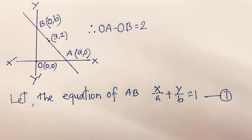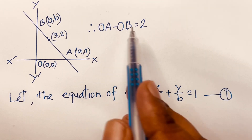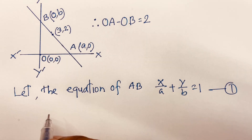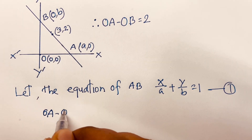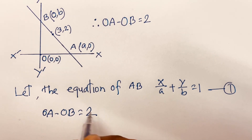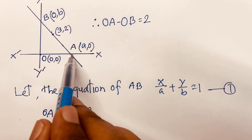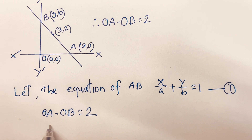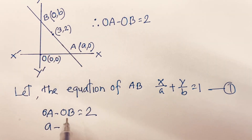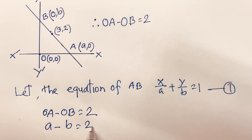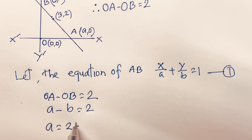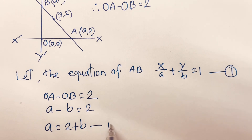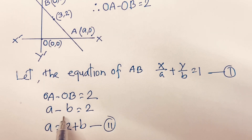Now here is OA minus OB is equal to 2. So OA equals a and OB equals b, giving us a minus b = 2. Then I can say a is equal to 2 plus b — we just move b to the right side.